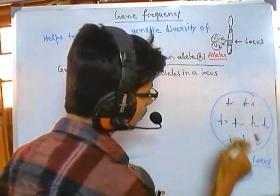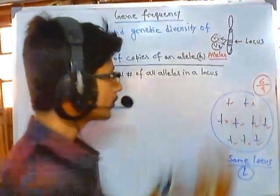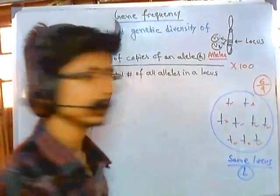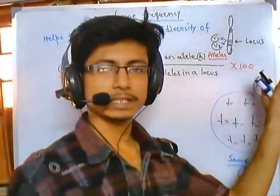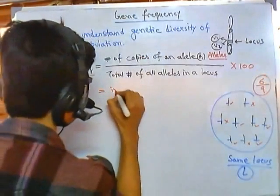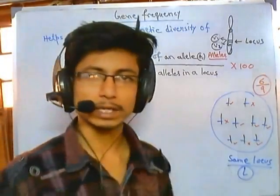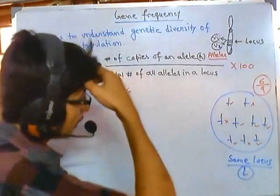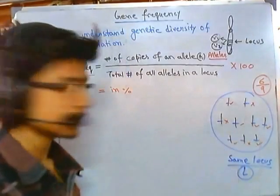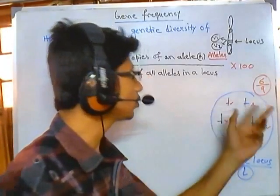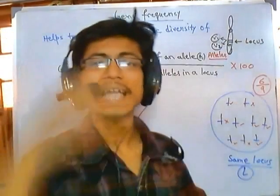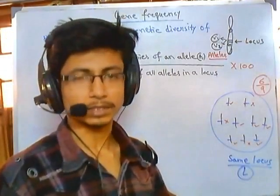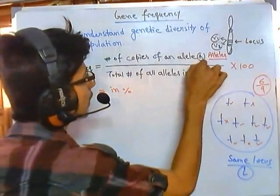In this example, the allele is present six times out of nine. Multiplied by 100, we get the frequency as a percentage — that's always how we express it. Similarly, in another population the same allele might be present only twice, giving a lower frequency in that population.